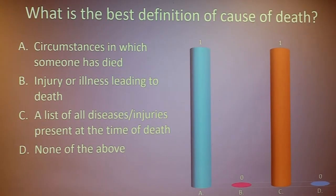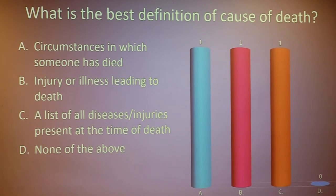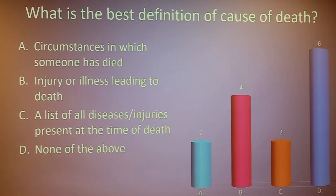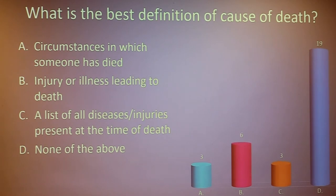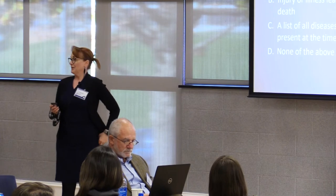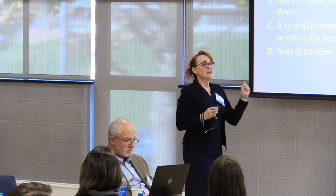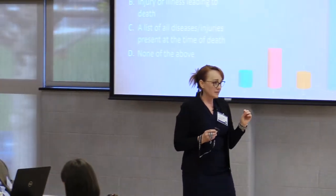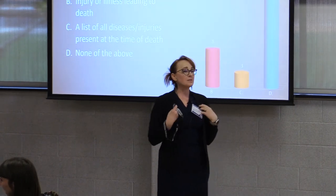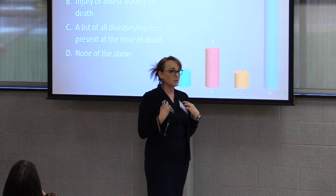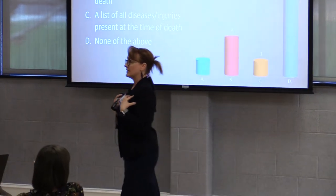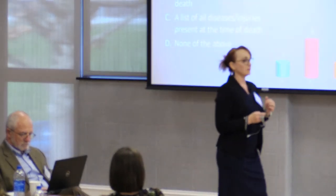What is the best definition of cause of death? The right answer is B: an injury or illness that sets in motion a chain of events that leads to death. That's medical examiner speak. It can get complicated, but that's what cause of death is. Cause of death is usually pretty easy to determine — sometimes not so easy. SIDS means there's been a complete autopsy and investigation and additional studies, and we still don't know why the child is dead.